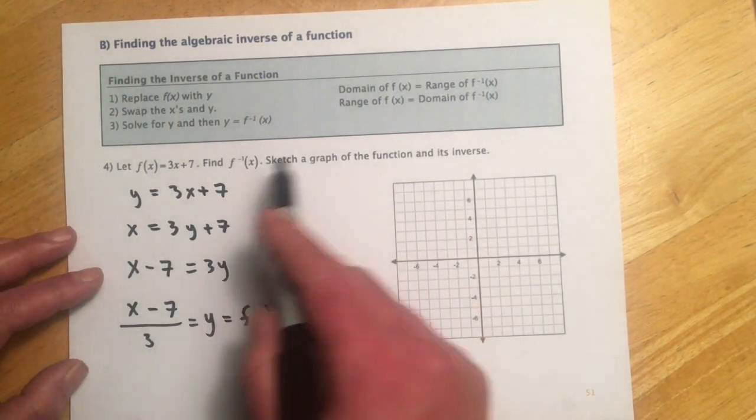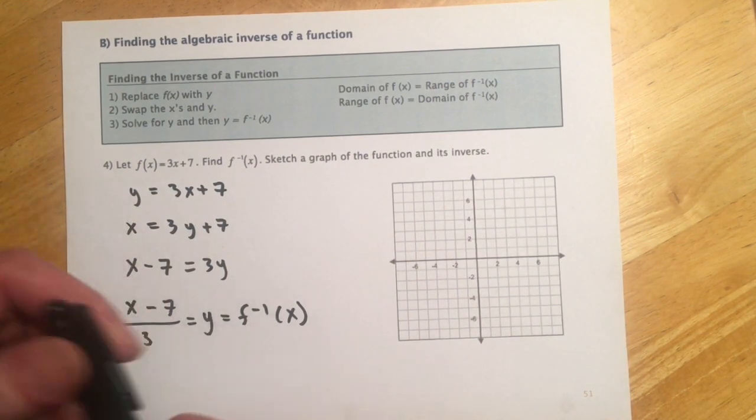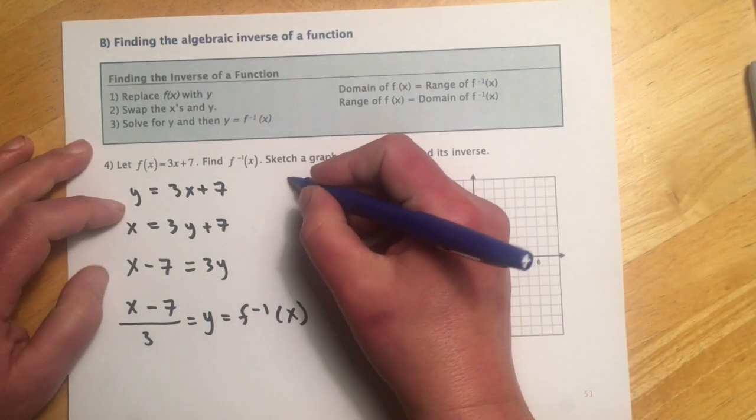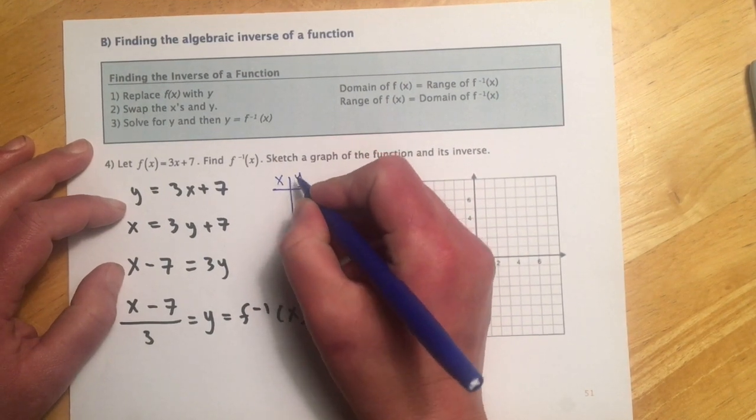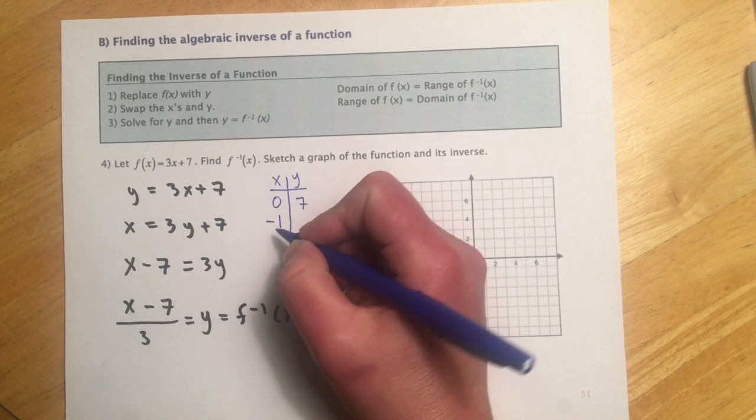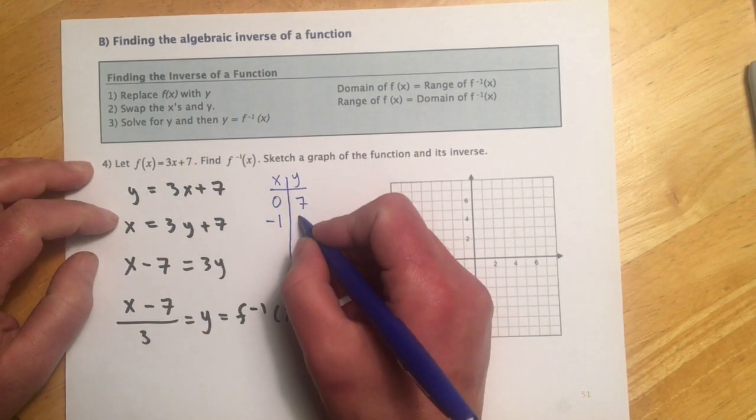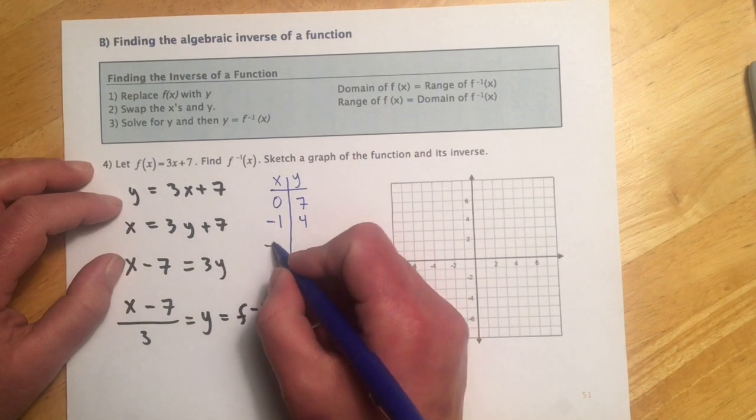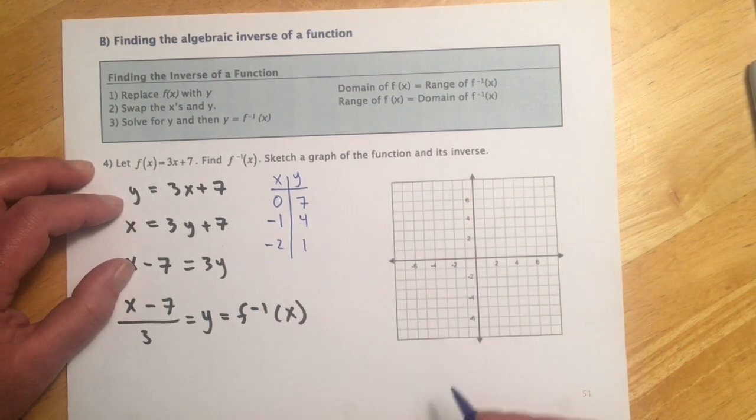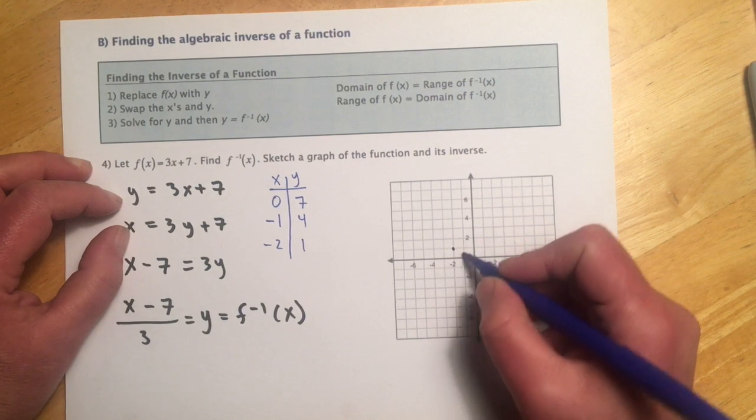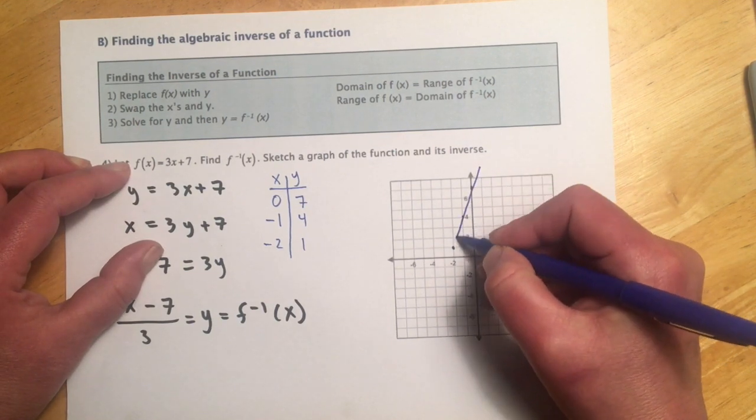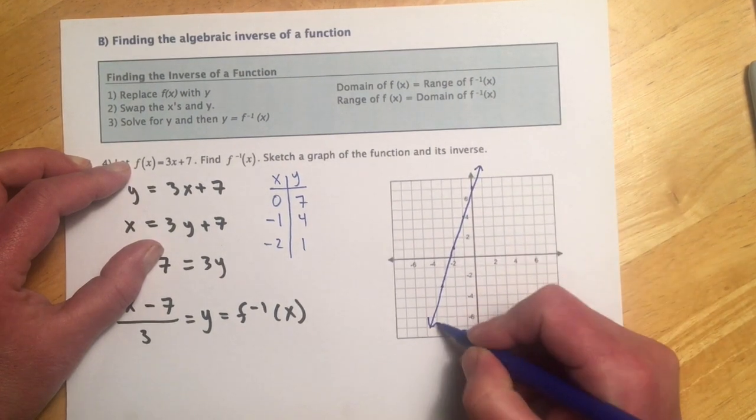The other thing on this particular question it asks is to sketch a graph of the function and its inverse. The function itself is a little bit easier to graph, so I'm going to do that one first. So here, I'll just do x, y. And when x is 0, y is 7. Much past that, it's going to be off my graph, so I'm going to go back to negative 1. When x is negative 1, negative 3 plus 7 would be 4. And if I wanted to go one more point, I could go negative 2, negative 6 plus 7, and that would be 1. So if I go, when x is negative 2, y is 1, when x is negative 1, y is 4, and then my last one would be right there at 7. I think it's something that kind of looks like that. So there's my original.